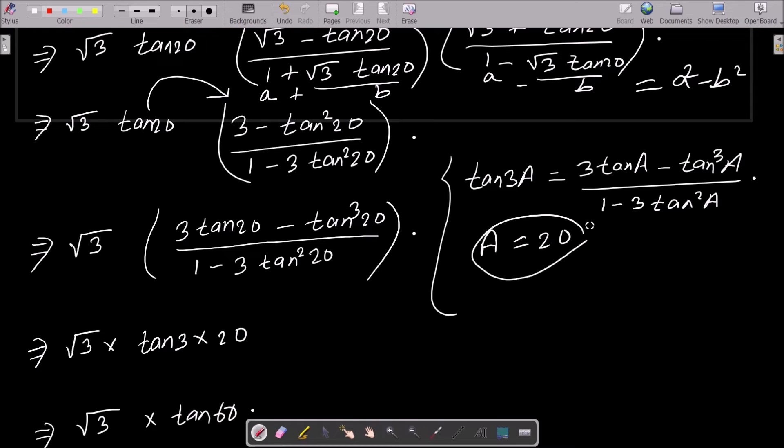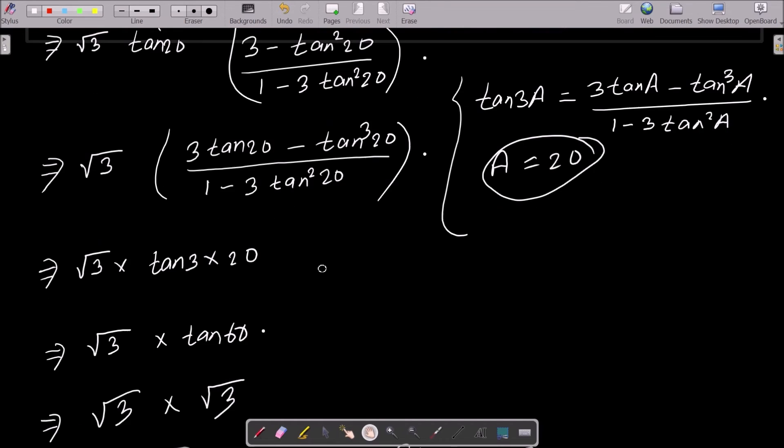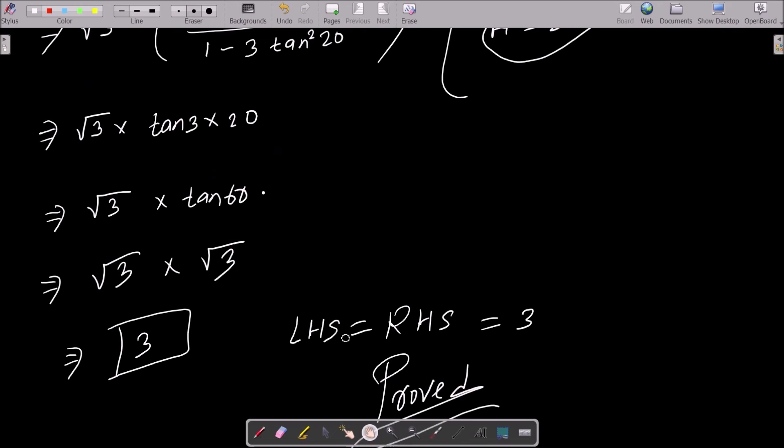Here you can see tan(3a) is 20°, so this is 3 × 20°. Then here √3, and this value is tan60°, that comes 3 × 20° is 60°. √3 × √3 equals √3. Now you can see LHS equals RHS, that's the proof.